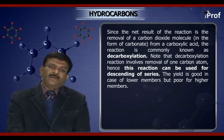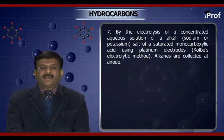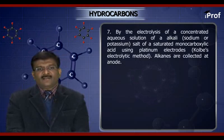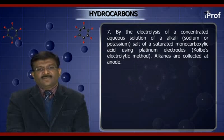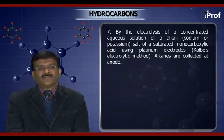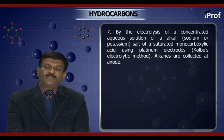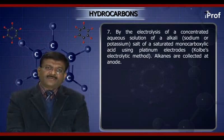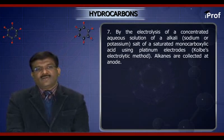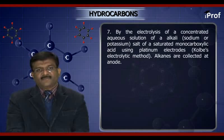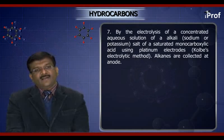Next, by the electrolysis of a concentrated aqueous solution of an alkali — that is, sodium or potassium salts of a saturated monocarboxylic acid using platinum electrodes — the reaction is known as, or the method is known as, the Kolbe electrolytic method. Alkanes are collected at the anode.